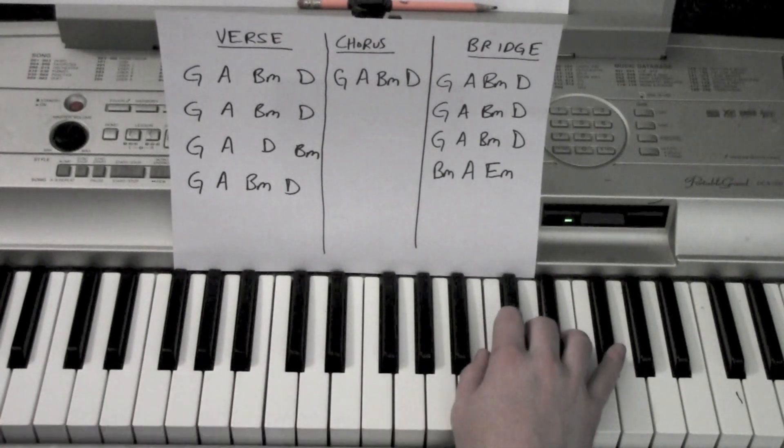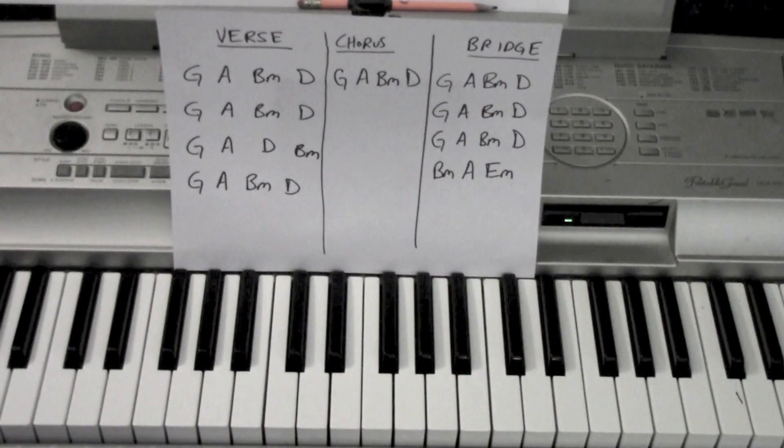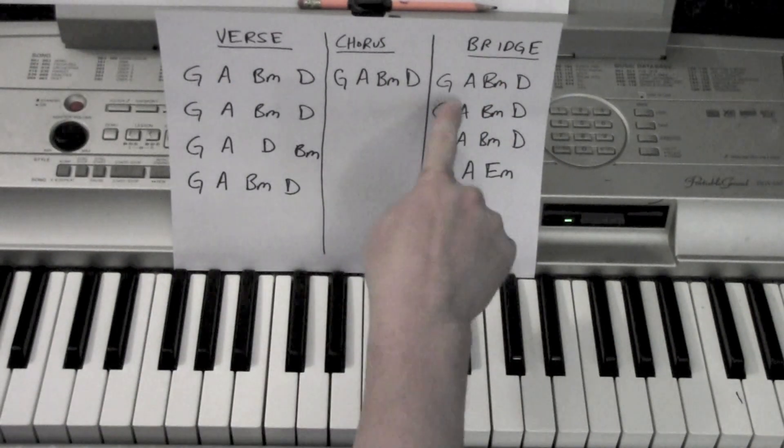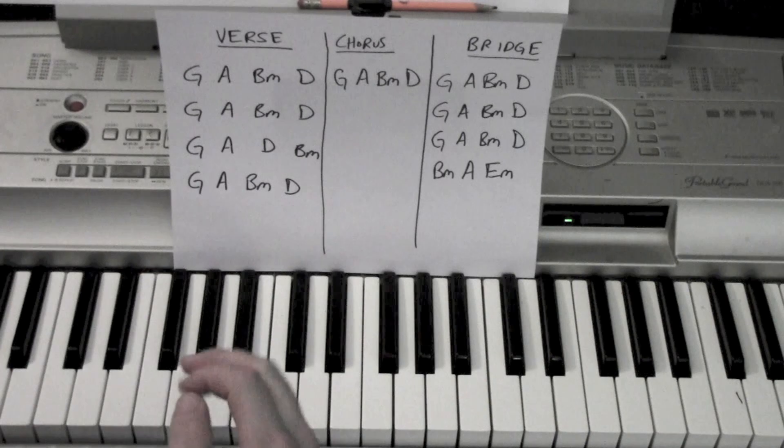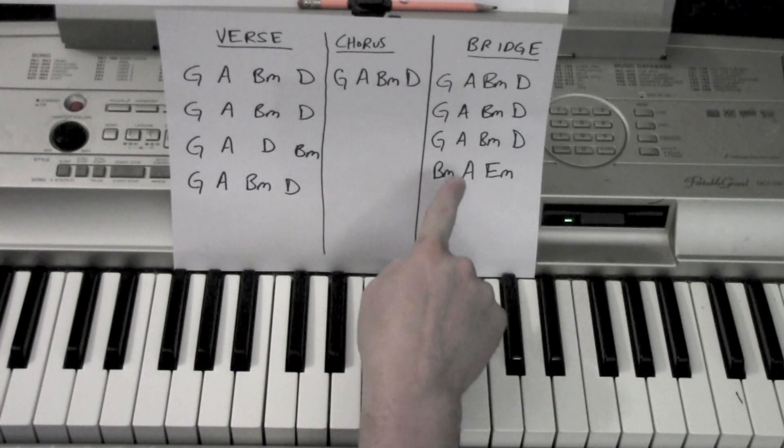Alright, last part we need is the bridge. Bridge follows this original pattern: G, A, B minor, D three times in a row. Last time ends on B minor, A, E minor. Good.